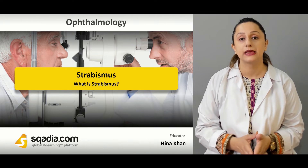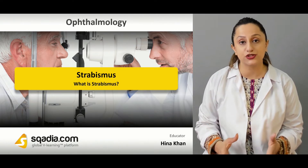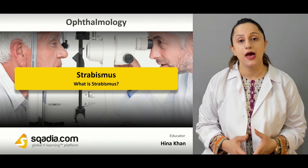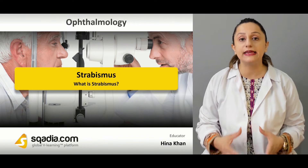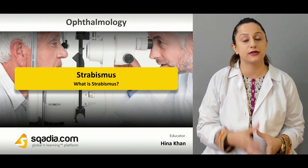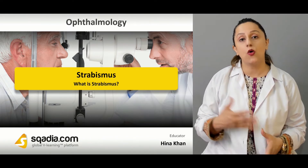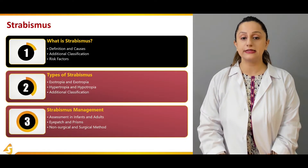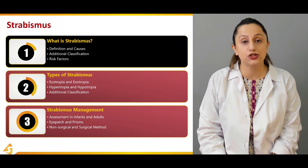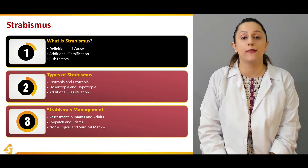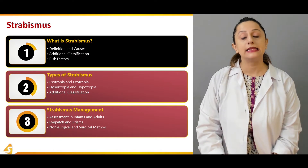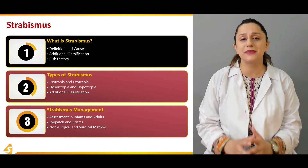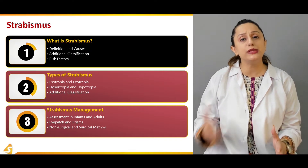It is very important to distinguish these two entities and to diagnose the case correctly — whether the patient is suffering from amblyopia or whether it is a case of strabismus. In this section we'll be focusing on the definition of strabismus. The misalignment is the major factor, and it is basically a condition which usually occurs unilaterally.